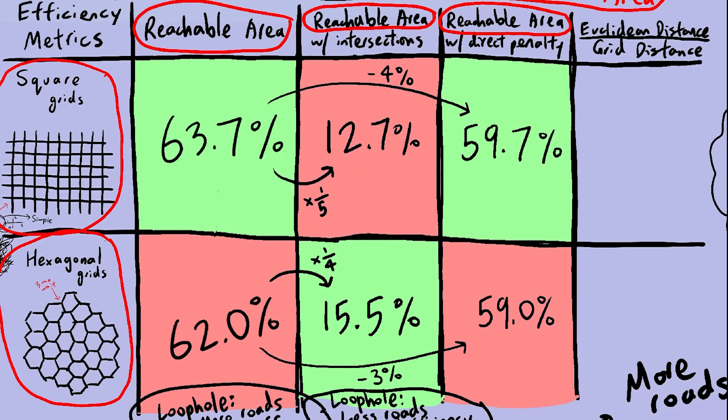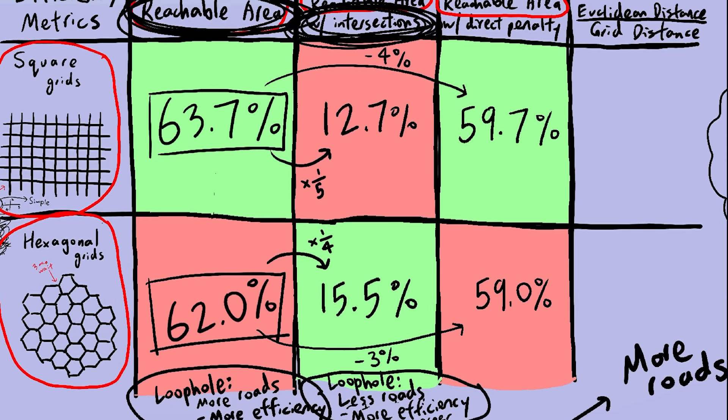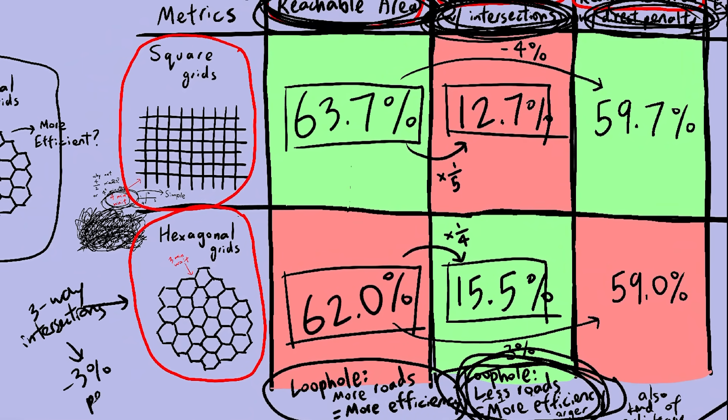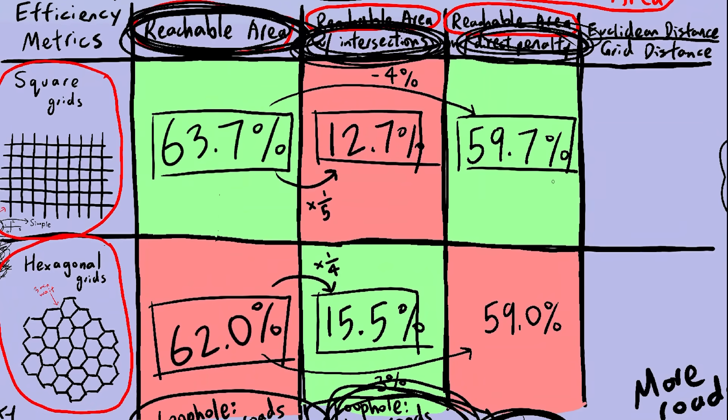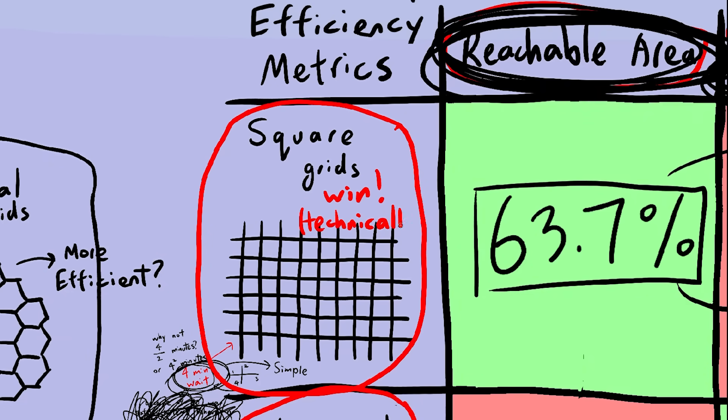Anyway, here are the final results of this video. If we measure efficiency using reachable area, square grids have efficiency 63.7% and hexagonal grids have efficiency 62%. Then we went on a side tangent where we tried waiting at each intersection and that didn't really work out. Too many inconsistencies, but hexagonal grids did end up winning. Our next efficiency metric was having a direct penalty based on the number of roads at each intersection. Again, this has a lot of problems with it, but we get 59.7% for square grids and 59% for hexagonal grids. And here we have our newest efficiency metric, Euclidean distance divided by grid distance. If we use this metric, square grids have efficiency 79.4% and hexagonal grids have efficiency 78.7%. Truly devastating for CGP Grey.